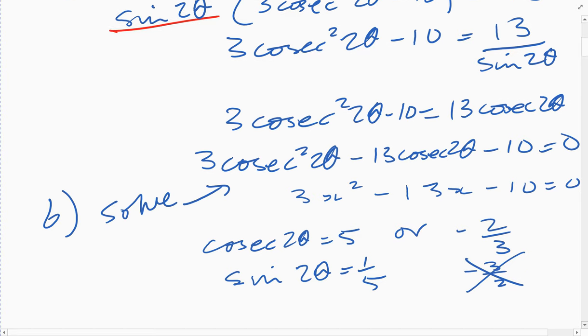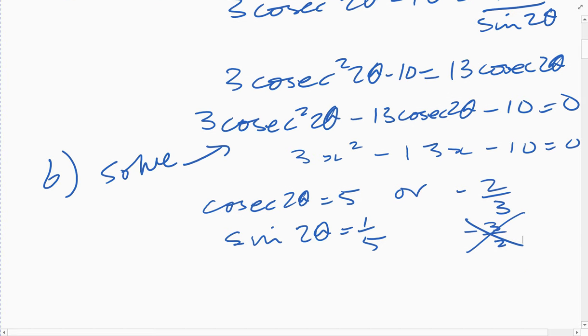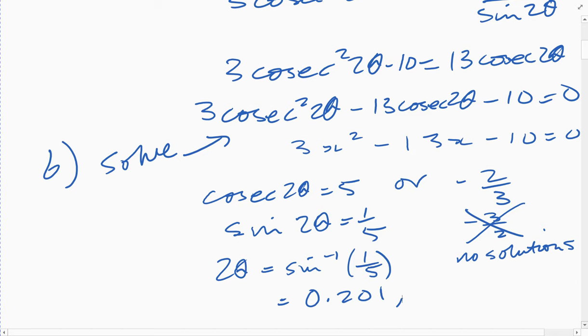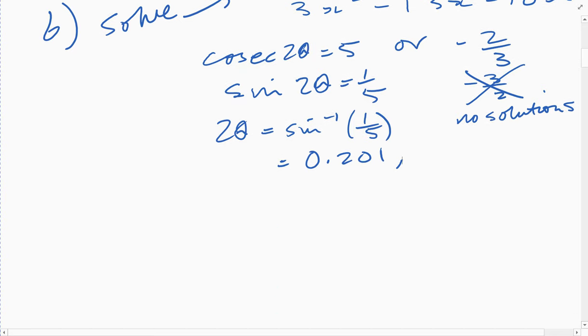So 2 theta is inverse sine of 1/5, and that is 0.201, usually three significant figures. For these, maybe you want to do four just before you get to the final answer. Now, whatever you do, do not divide by 2. You only divide by 2 at the very, very, very end.